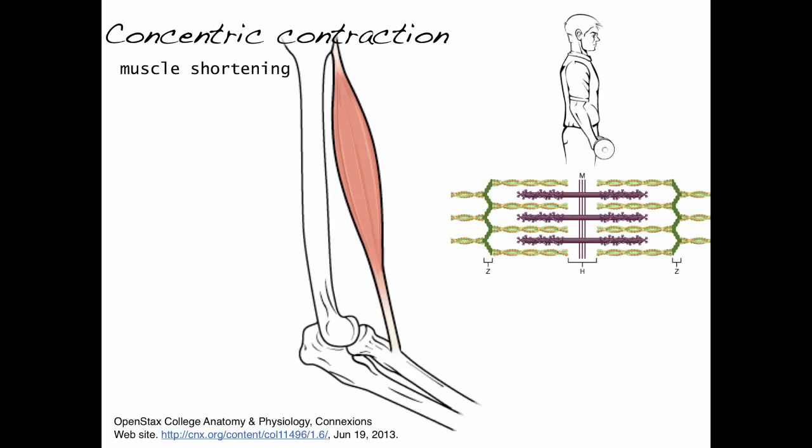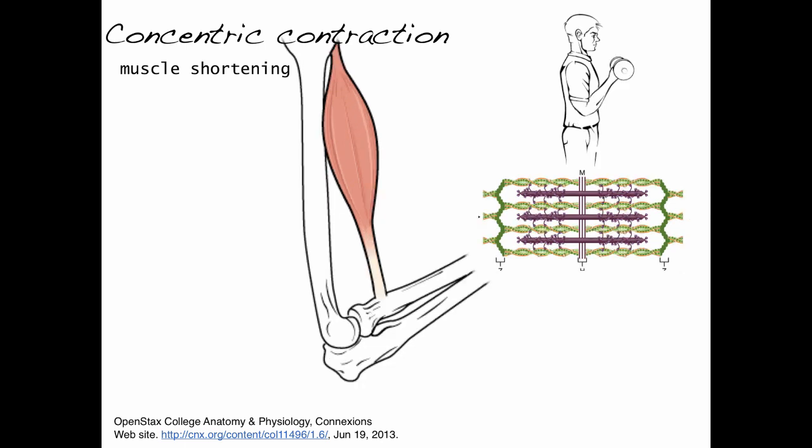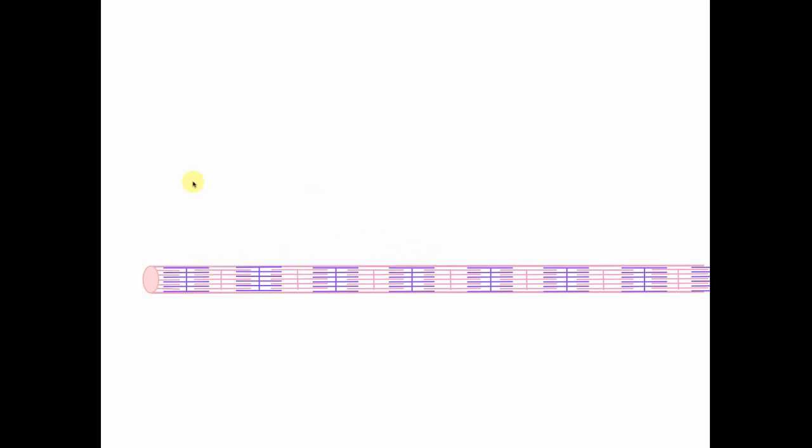If we take a closer look at a sarcomere — the individual unit of a muscle fiber — what you'll see is that it shortens. Individual sarcomeres are found in myofibrils side by side. So that muscle shortening is caused by shortening of sarcomeres.